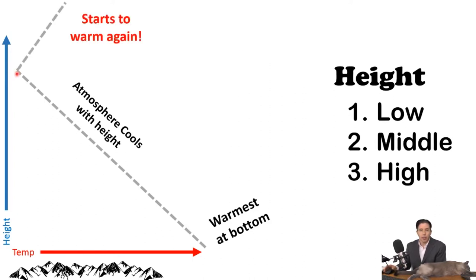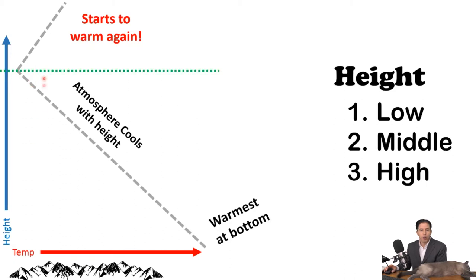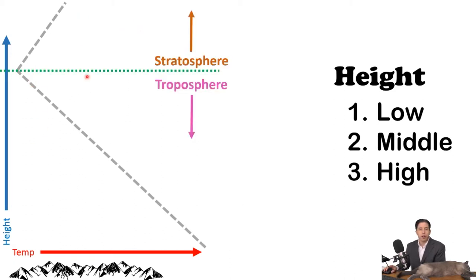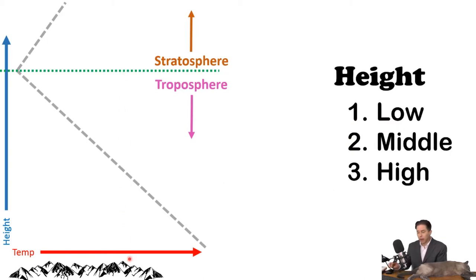The reason it gets warmer again has to do with the ozone layer. This transition — from when it gets colder with height to where it gets warmer with height — forms a natural boundary between two layers. All the air below that point is called the troposphere, and all the air above is called the stratosphere. All the clouds we see are in the troposphere, and all the weather happens in the troposphere. When we talk about low, middle, and high clouds, we're talking about where in the troposphere the clouds occur.